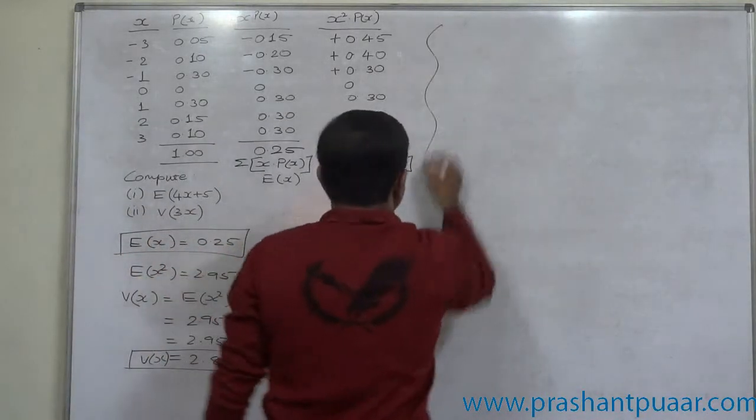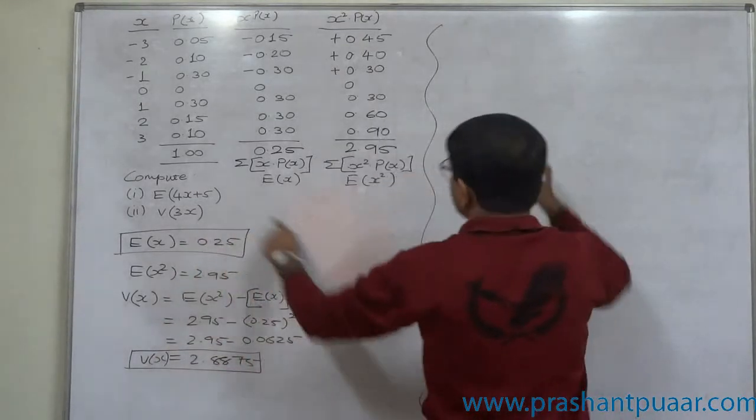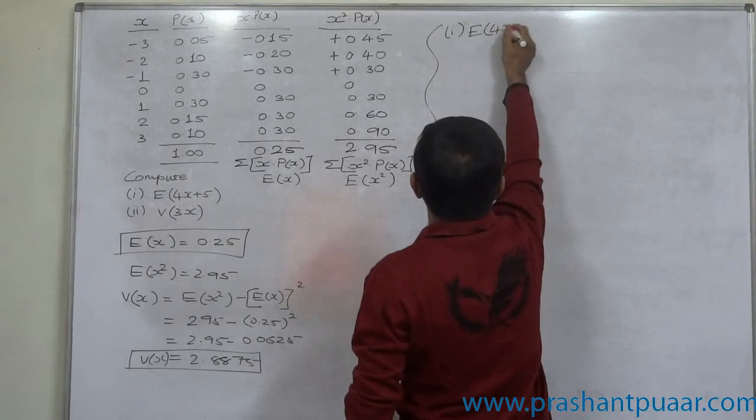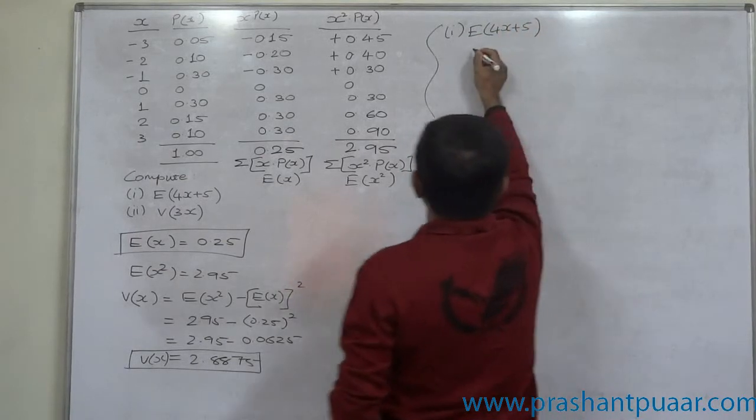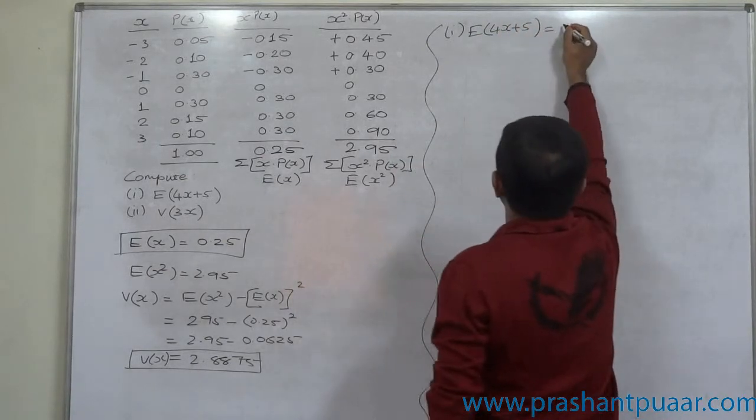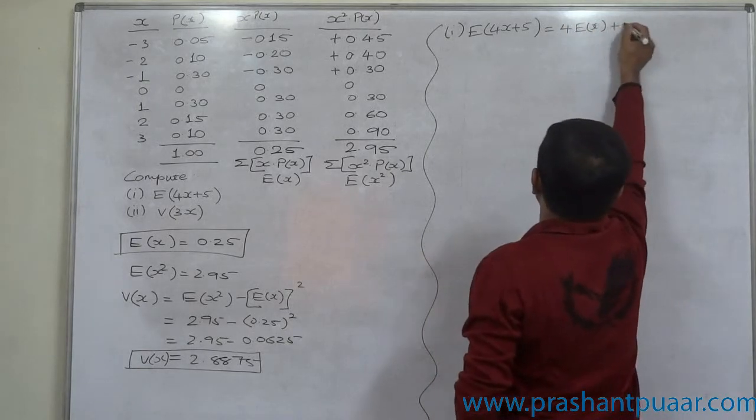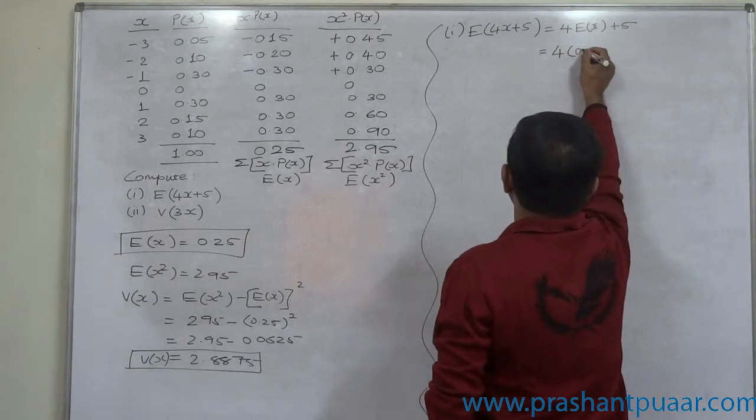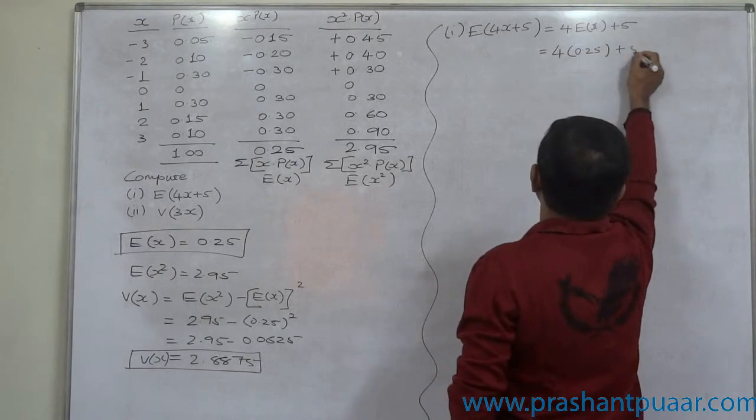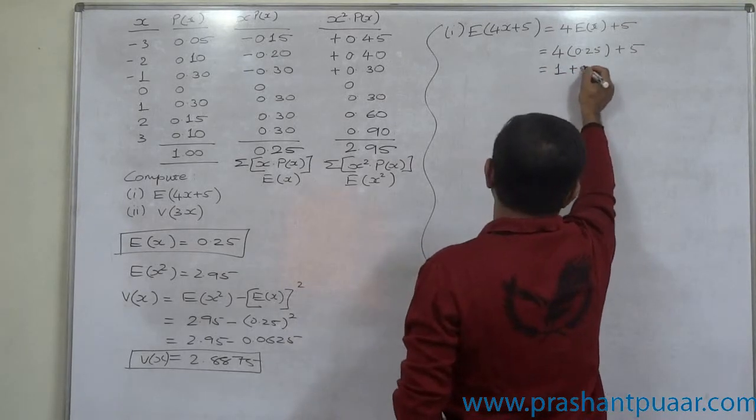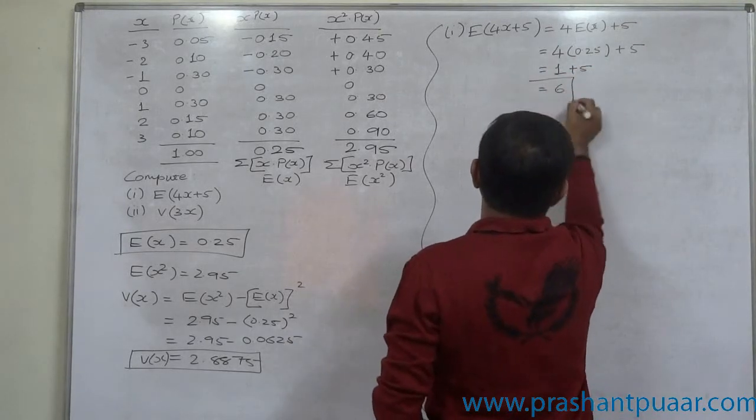Now we can calculate these two. First we require to calculate E of 4x plus 5. Now we know that it is 4E of x plus 5. 4 into 0.25 is 1 plus 5. So the ultimate result is 6.